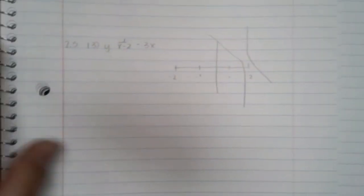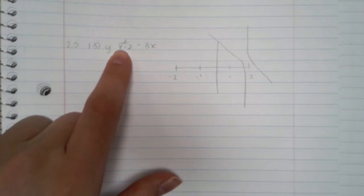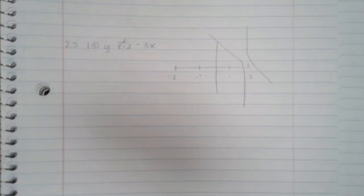That makes sense because if you plug in 2, you'll get a 0 on the bottom, which does not exist. So yeah, I agree with that.